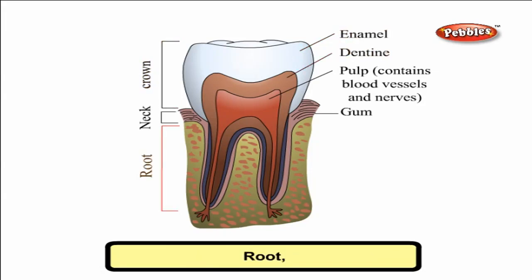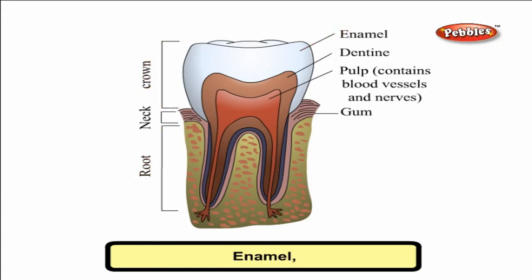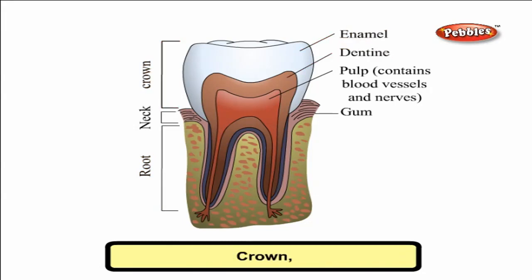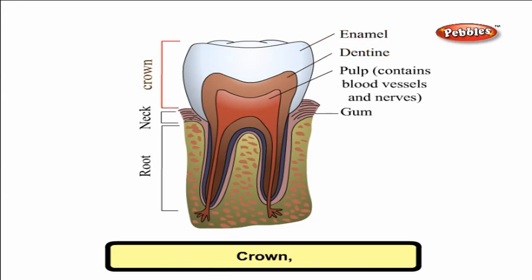Inside the dentine, there is pulp which is very soft and full of nerves and blood vessels. The root is covered with a bone-like substance called cementum. It binds the root firmly to the gums and jaw bones. The tooth is white in color because of its enamel, and the tooth is hard because of its dentine.